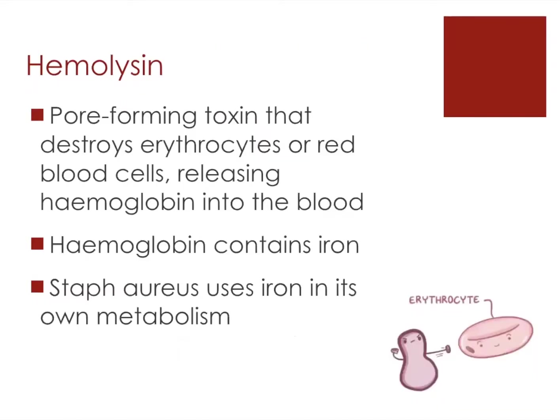Hemolysin is a pore-forming toxin that destroys erythrocytes, or red blood cells, and releases their hemoglobin into the blood. Hemoglobin contains iron, and Staph aureus does this for one particular reason: it can use that iron for its own metabolism.